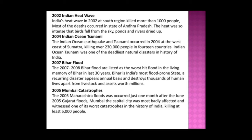The Indian Heat Wave of 2002 in southern India killed more than 1,000 people, with most deaths in Andhra Pradesh. The heat was so intense that birds fell from the sky and ponds and rivers dried up. The 2004 Indian Ocean Tsunami occurred at the west coast of Sumatra, killing over 230,000 people in 14 countries, and was one of the deadliest natural disasters in history. The 2007–08 Bihar Flood was listed as the worst flood in the living memory of Bihar in 30 years; Bihar is India's most flood-prone state, with floods destroying thousands of human lives and assets worth millions annually.